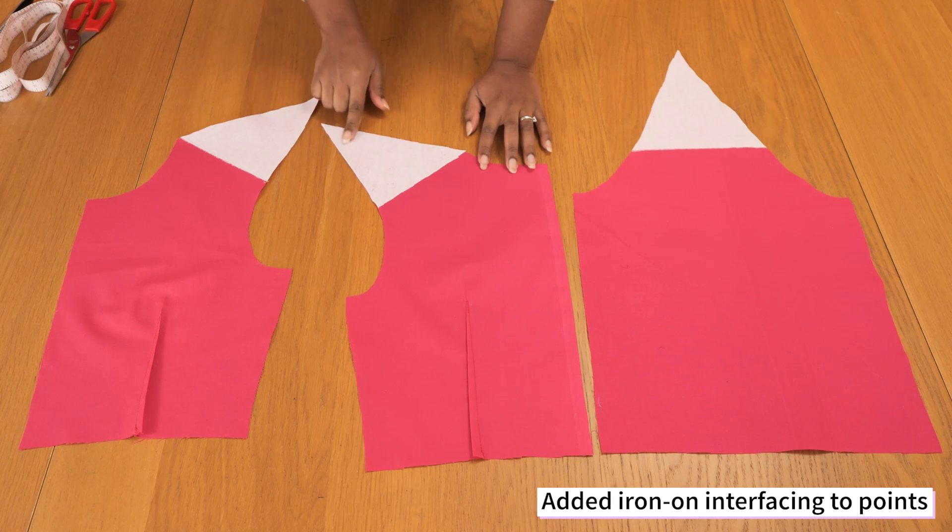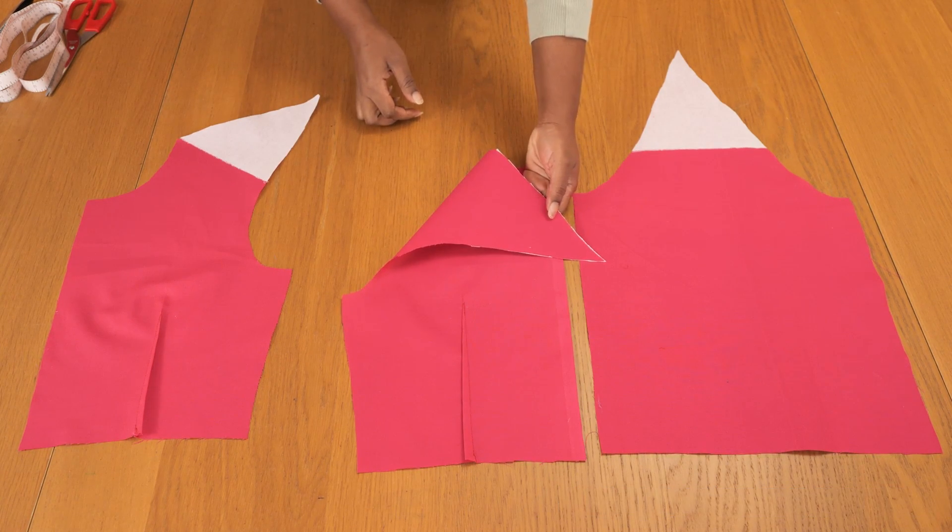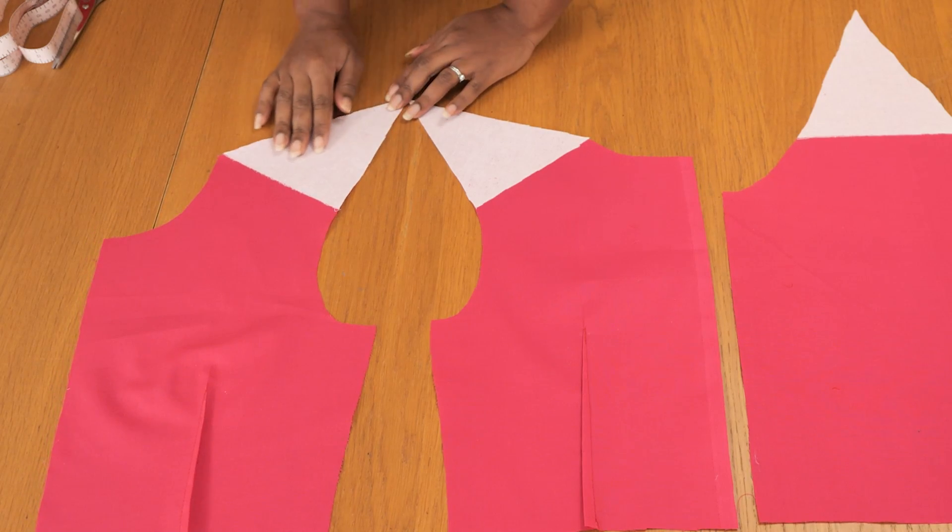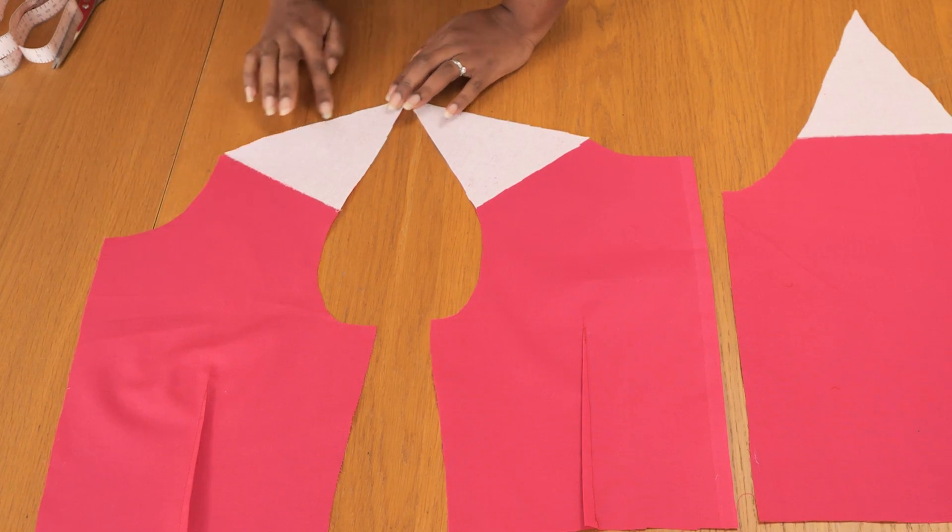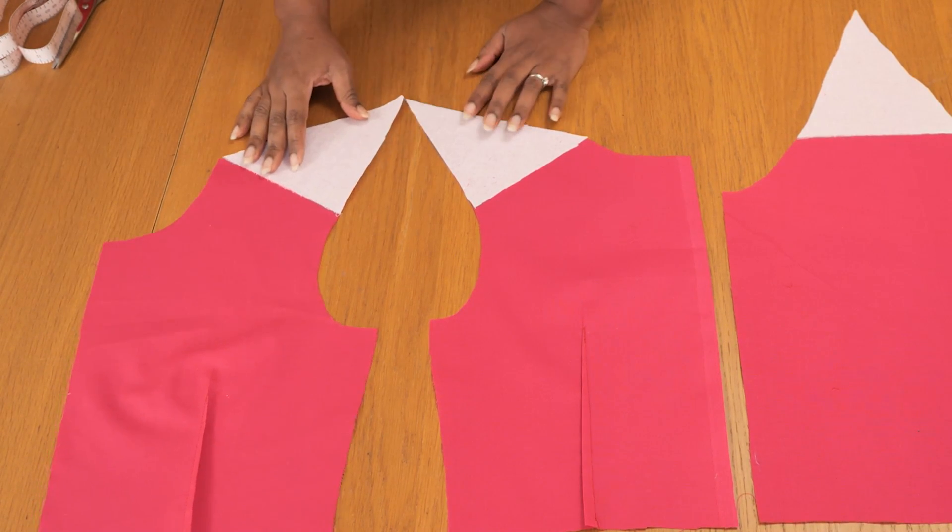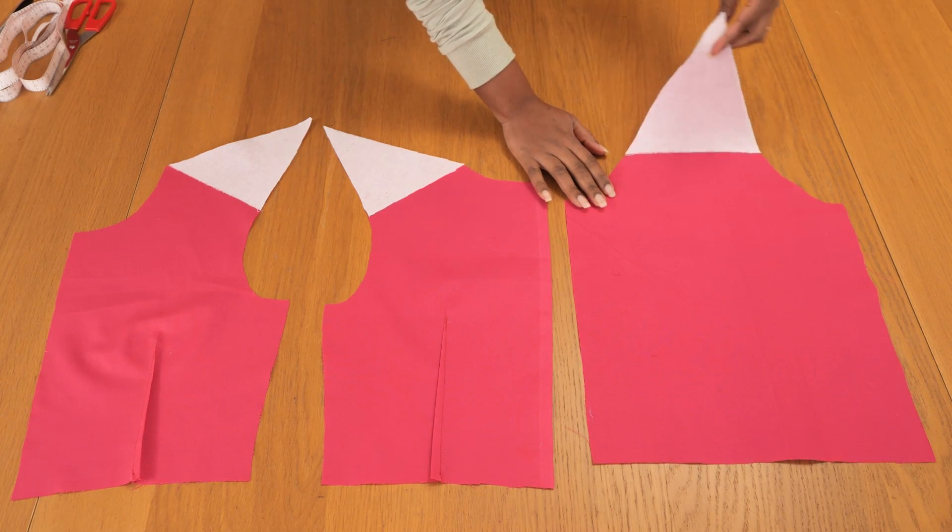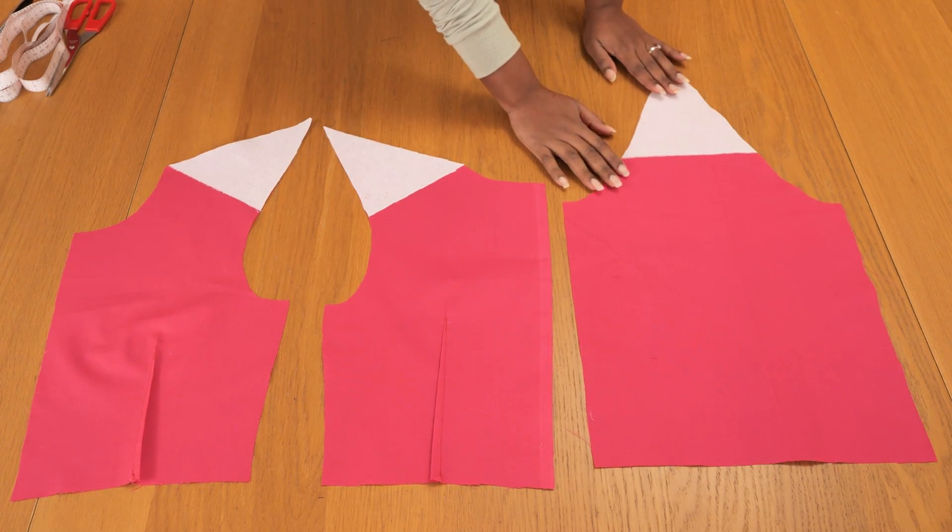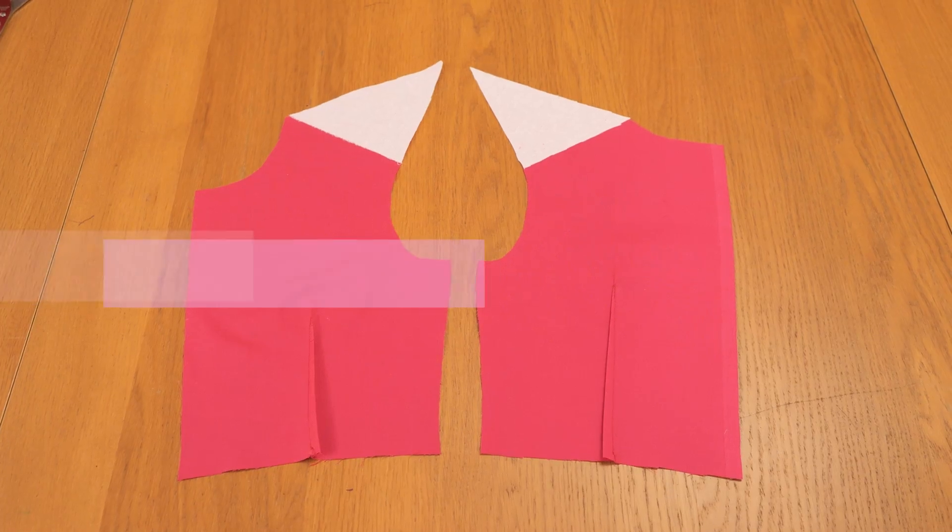The other thing I did was I ironed on some interfacing on the top edge, and that would help to make the shape really stand strong and firm. I did this on the bodice and I did this on the sleeve as well, because the cotton does not have a lot of weight to really hold the shape of the detail.